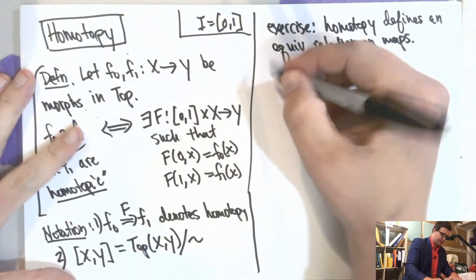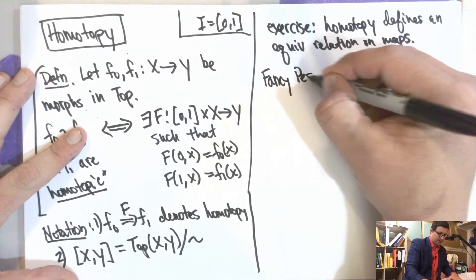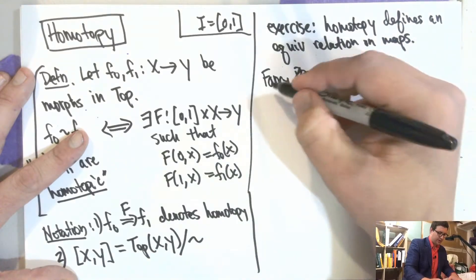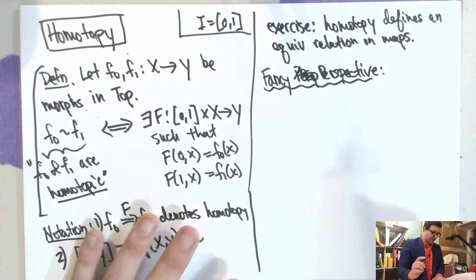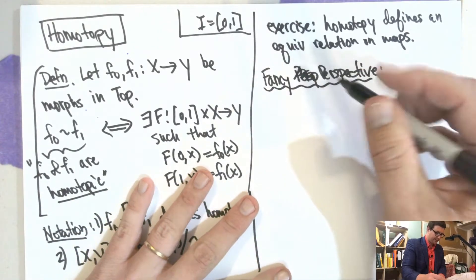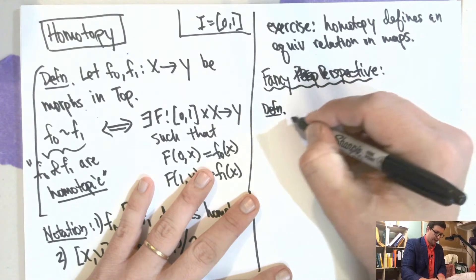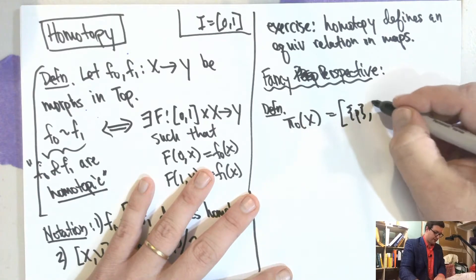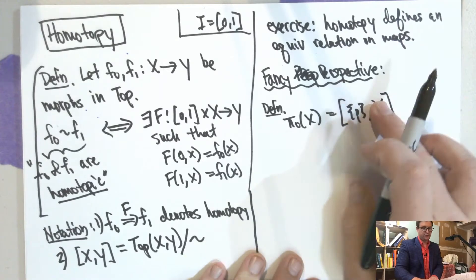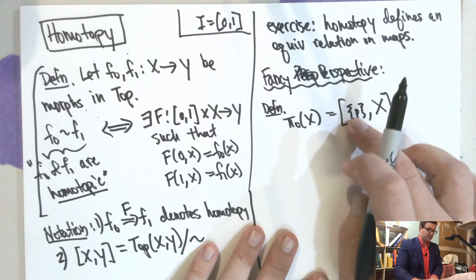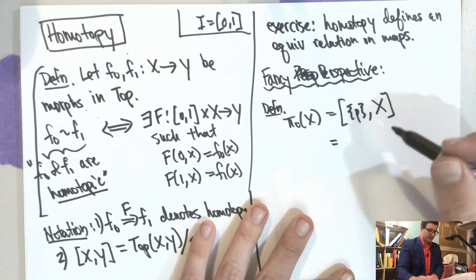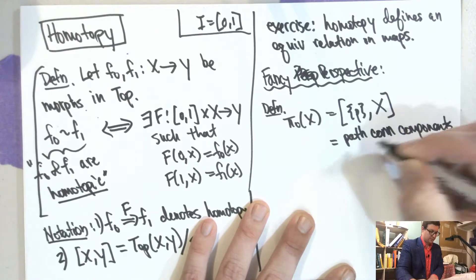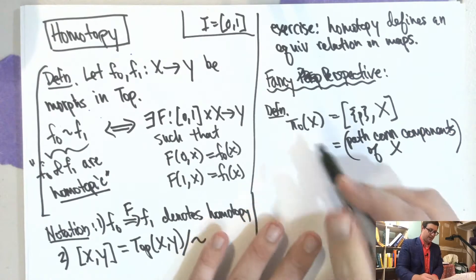But there's kind of a fancy perspective. We're going to use the compact open topology now. So the fancy perspective is first, we can define, let's make a definition. So pi zero of a topological space. I take a single point and I take the equivalence class of maps of this point in here. So this is when two points are path connected. This thing here is the path connected components of this X.